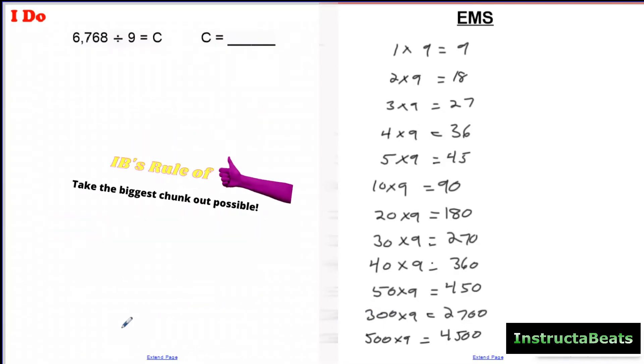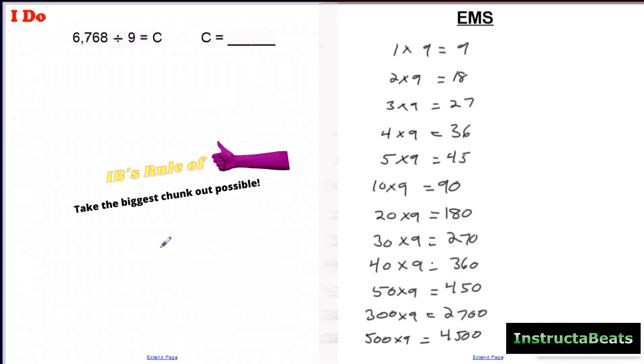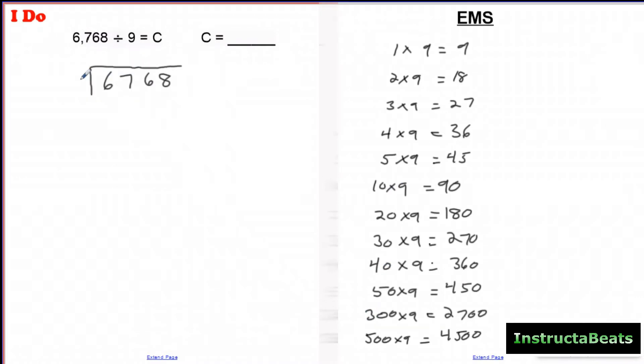I'm going to do 40 times 9 is going to be 360. And 50 times 9 is going to be 450. Now, I see I am nowhere close to my dividend and I don't want to make this forever. So, I'm going to jump to 300 here. 300 times 9, that'd be 2,700. I see I'm not really close yet. So, let me just go ahead and jump to 500 and I'll do 500 times 9 would be 4,500.